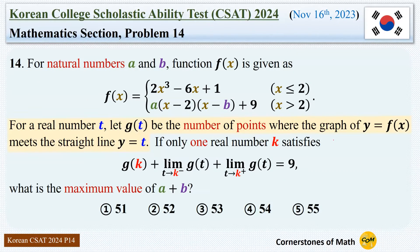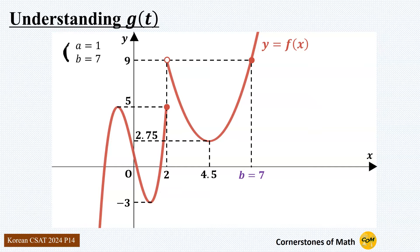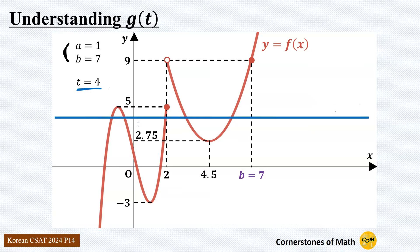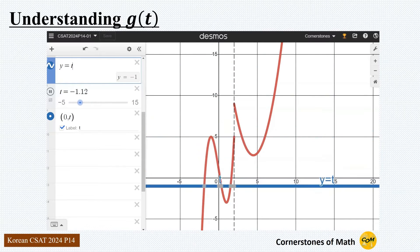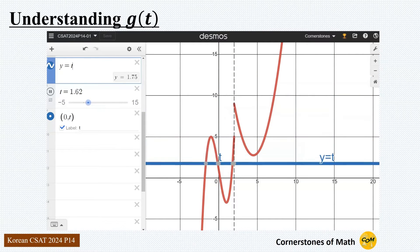Now that we know how the graph of f(x) looks, let's move on to the next part of the problem. This part defines another function, g(t). For a real number t, g(t) is the number of points where the graph of y equals f(x) meets the straight line y equals t. For example, with specific values of a and b, we want to find g(4). We consider the line y equals 4 and count the intersection points with the curve. There are 1, 2, 3, 4, 5 intersection points in total, so g(4) equals 5.